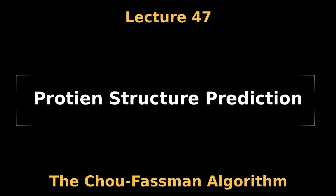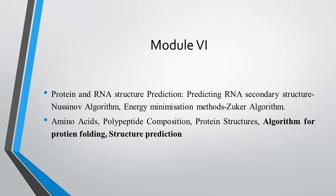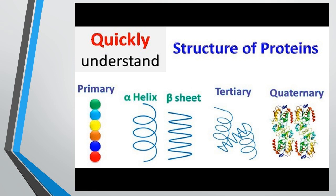Protein folding is the most complicated process and is still considered a mystery. But identification of the shape of protein folding is important because the shape determines the function of the protein. Advancements in chemistry, physics, biology, bioinformatics, and related fields enable us to predict the protein structure to a certain extent. The structure of protein can be explained as primary structure, secondary structure, tertiary structure, and quaternary structure.